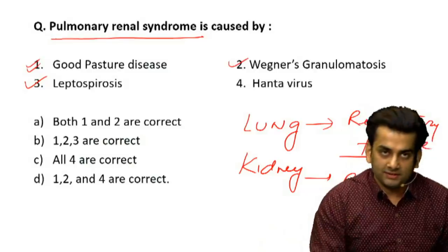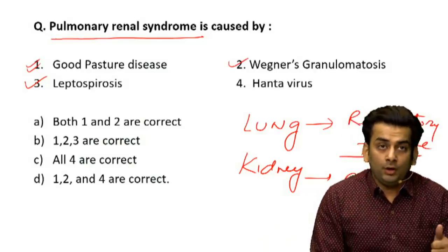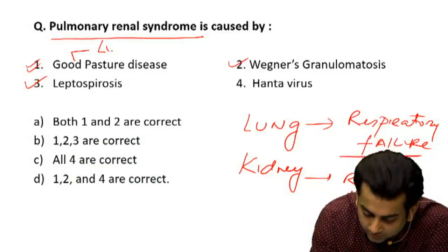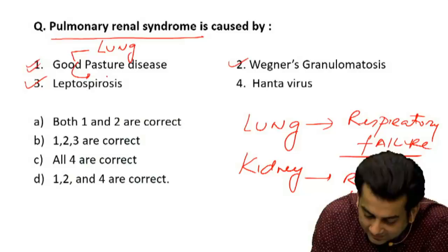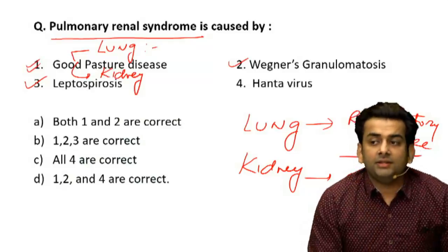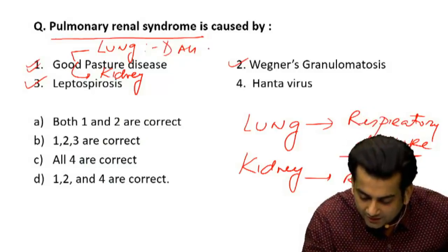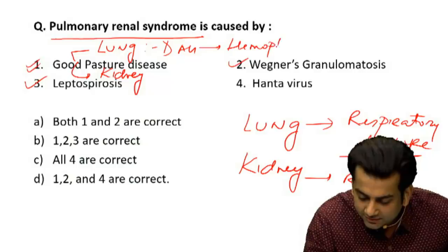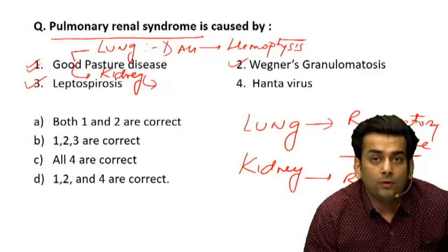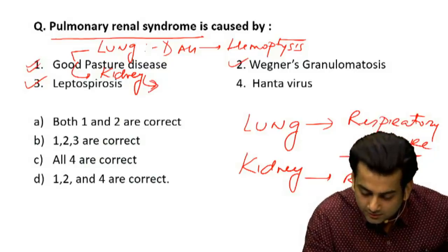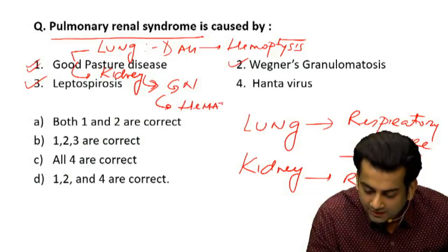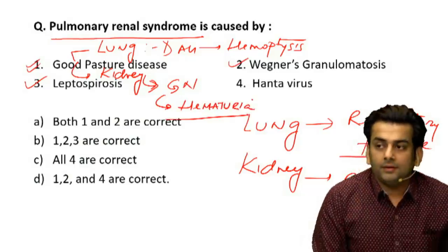Goodpasture's disease affects both the lung and the kidney. When it affects the lung, it causes diffuse alveolar hemorrhage and the patient presents with hemoptysis. When it affects the kidney, it causes glomerulonephritis and the patient presents with hematuria.